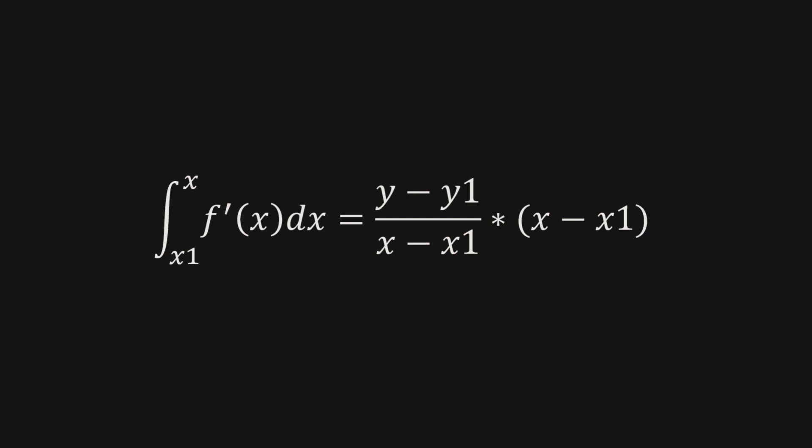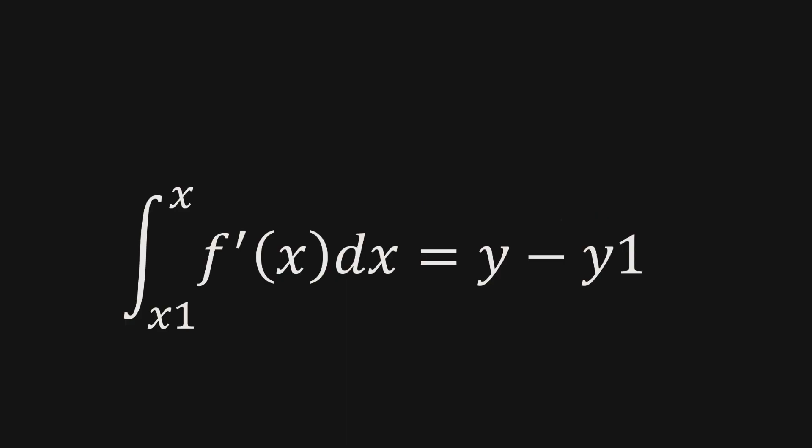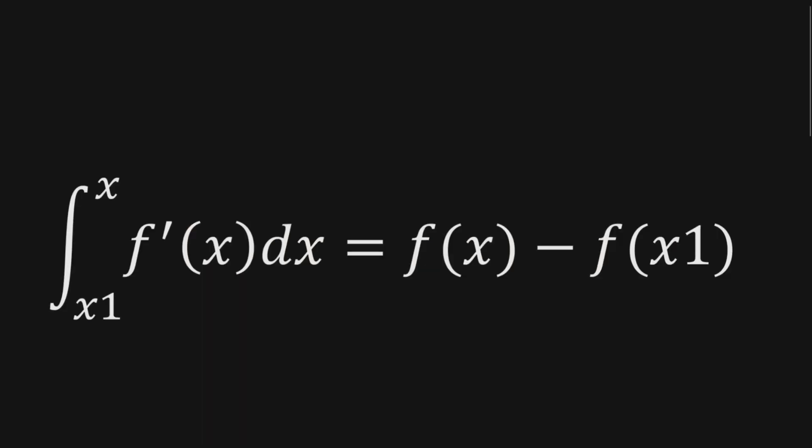And now a cancellation happens. x minus x1 appears both on the top and the bottom and they cancel out each other. And now we're left with y minus y1. And what's y here? Y is simply f of x and y1 is f of x1. So we're going to replace y and y1 with those.